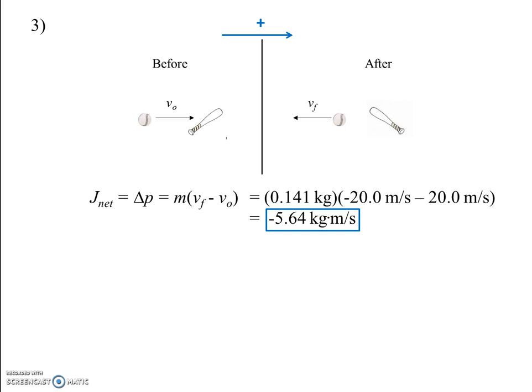If you hadn't assigned a positive direction and treated everything as scalar, you'd have 20 minus 20, you'd have 0, and that wouldn't make any sense. We'll come back to that idea soon.